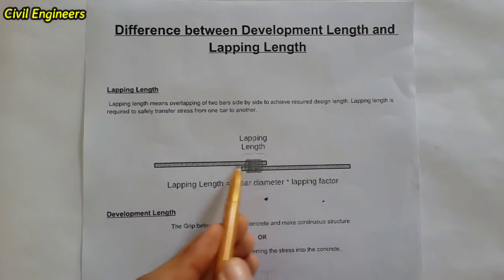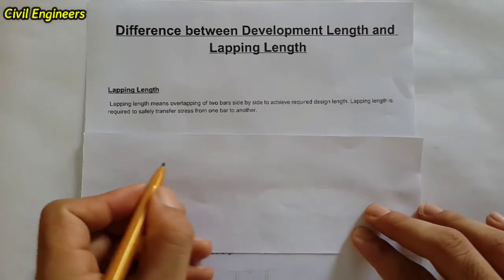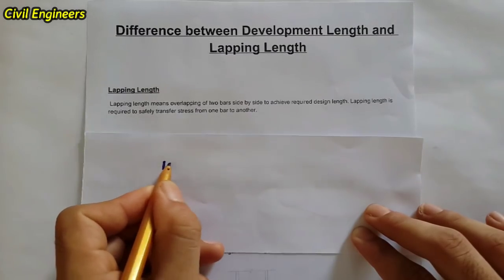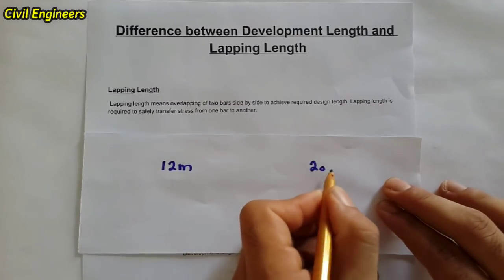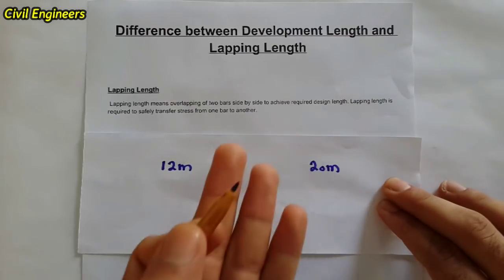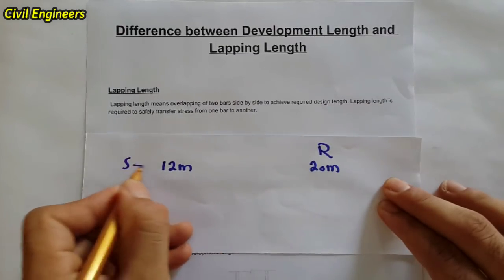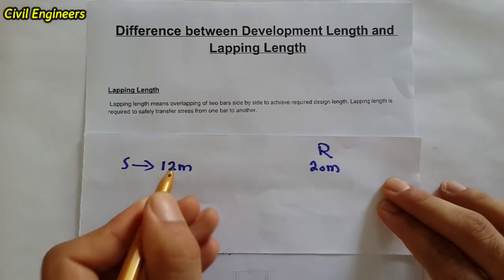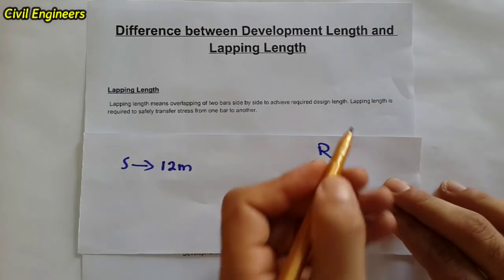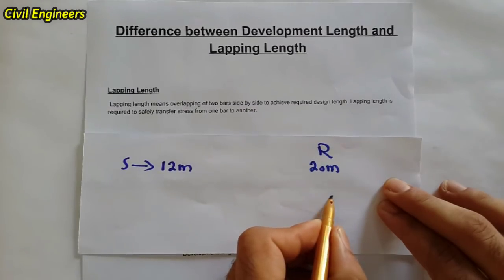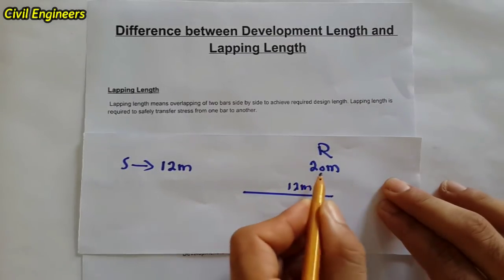Here is the diagram for lapping length. The standard length of a steel bar available in the market is 12 meters. If we need a 20-meter design length for a slab, beam, or other structural element, we cannot get that from a single standard bar. So we need to achieve the required design length by using multiple bars.